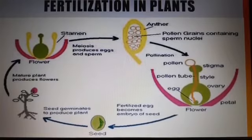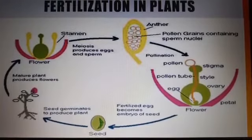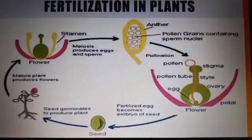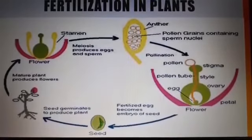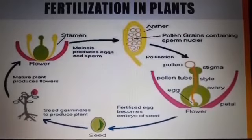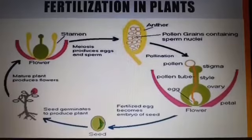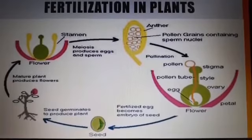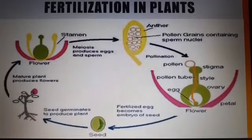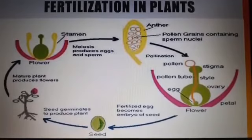This is the process of fertilization, which further leads to the formation of a seed. Certain events occur after fertilization — such as petals, sepals, and stamens drying off and falling.